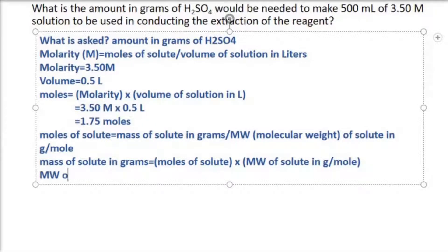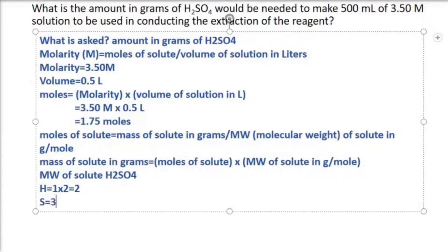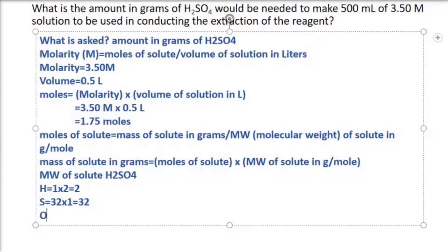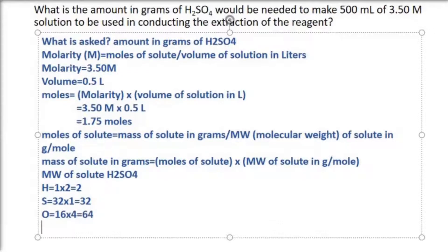We need to find the molecular weight of sulfuric acid, H₂SO4. Hydrogen has 1 g/mol × 2 = 2 g/mol. Sulfur has 32 g/mol × 1 = 32 g/mol. Oxygen has 16 g/mol × 4 = 64 g/mol. The total molecular weight is 98 g/mol.